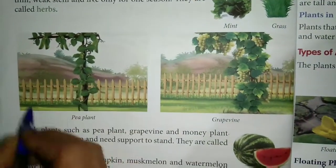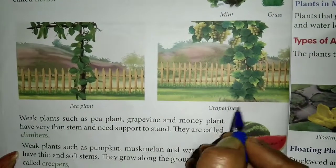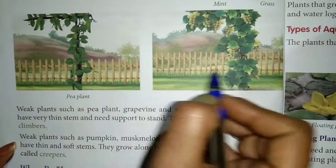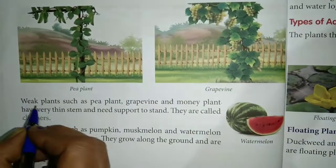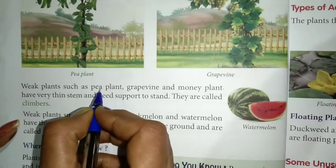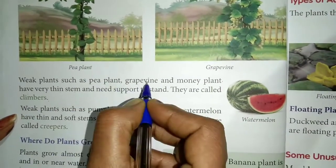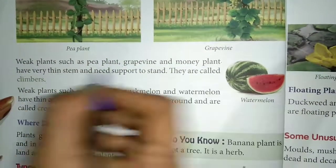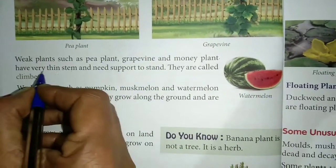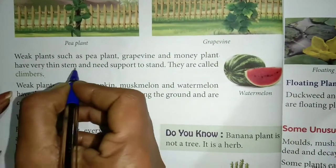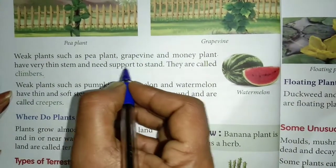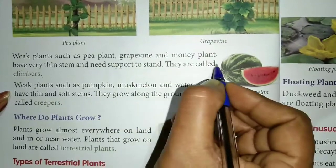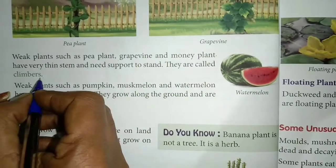Next, pea plant and grapevine. Weak plants such as pea plant, grapevine and money plant have very thin stem and need support to grow. They are called climbers.